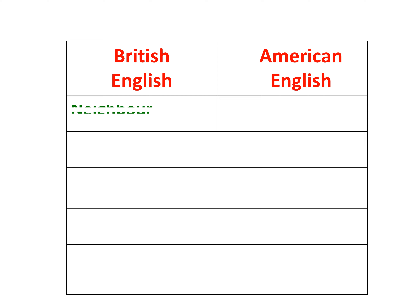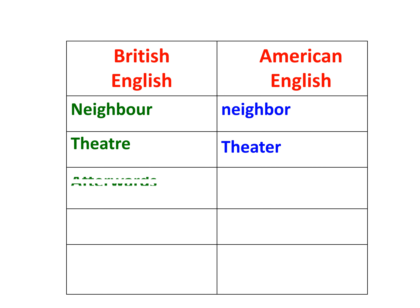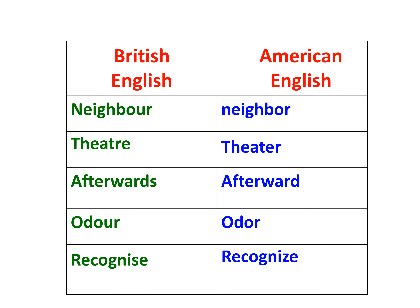Next word is Neighbour — British English is N-E-I-G-H-B-O-U-R. American English is N-E-I-G-H-B-O-R, the U is missing. Next word is Theatre — British English ends in R-E. American English ends in E-R. Next word is Afterwards — American English drops the last S. Next word is Odour — British English is O-D-O-U-R. American English is O-D-O-R, the U is missing. Next word is Recognise — British English ends in S-E. American English ends in Z-E, same pattern as Memorize.